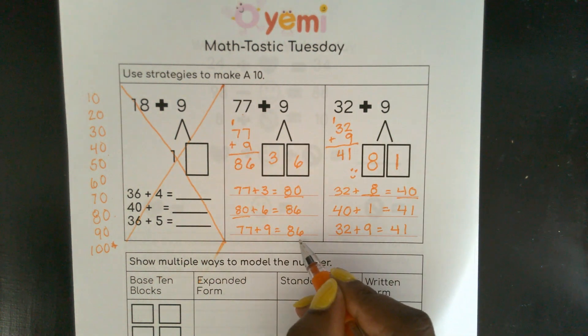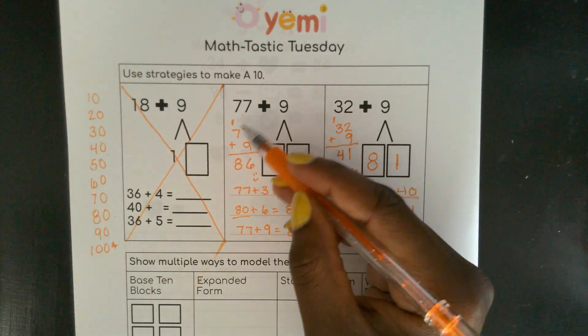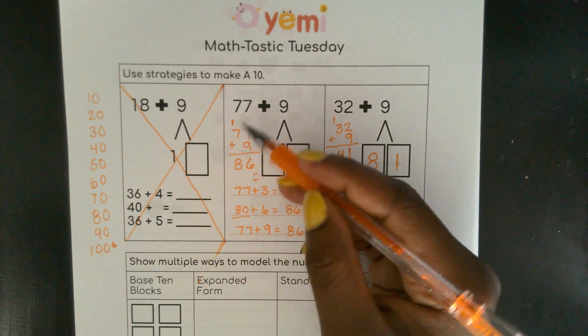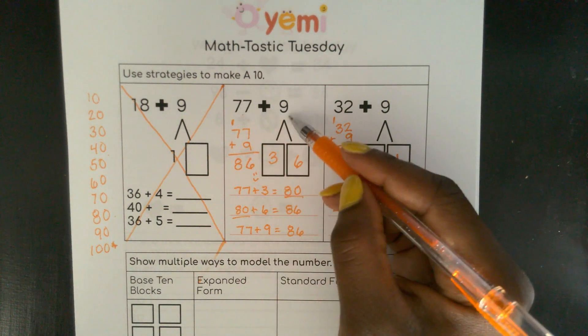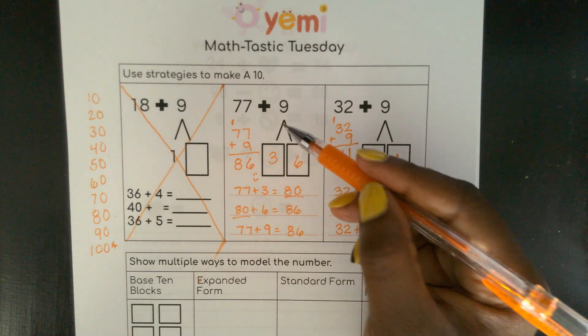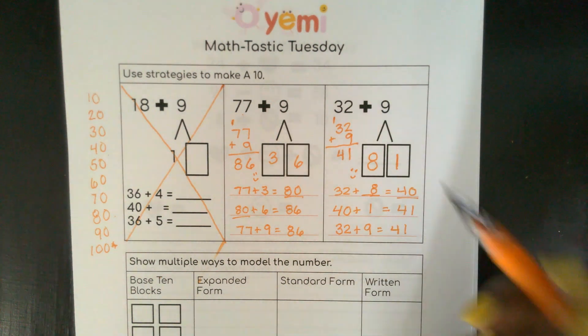See? Same exact answer. This one, you work out. You do your 9 plus, you do your 1s, and then you do your 10s. For this strategy, you're using what you know about numbers and manipulating numbers to help you solve. Excellent work.